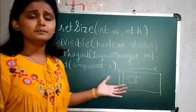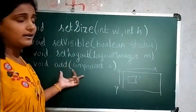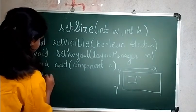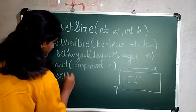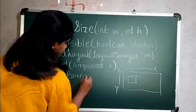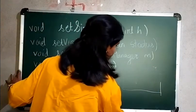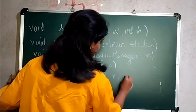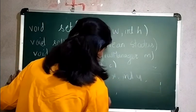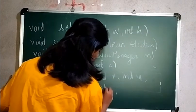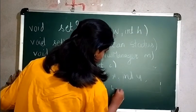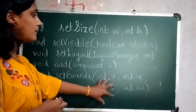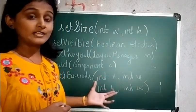The next one is the add(Component) method — we are going to add some components using that method. And another method is void setBounds, which takes four parameters: integer x, integer y, integer height, and integer width.